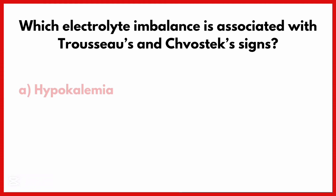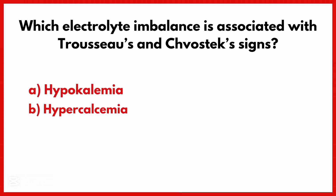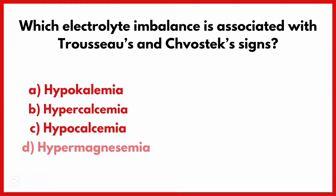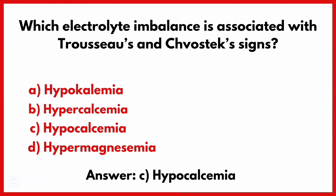Which electrolyte imbalance is associated with Trousseau's and Chvostek's signs? The correct answer is option C: Hypocalcemia.